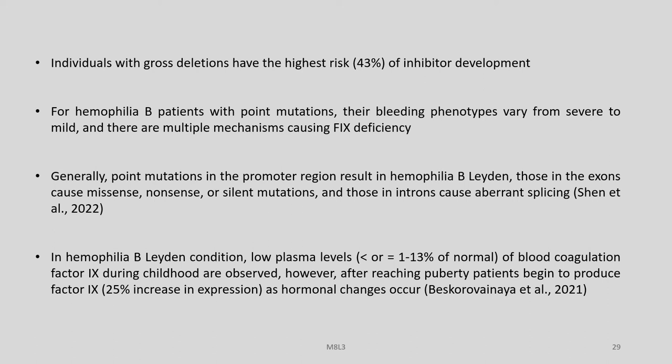Individuals with gross deletions of F9 have the highest risk of inhibitor development, about 43%. For Haemophilia B patients with point mutations, bleeding phenotypes vary from severe to mild with multiple mechanisms causing factor 9 deficiency. Generally, point mutations in the promoter region result in Haemophilia B Leyden; those in the exons cause missense, nonsense, or silent mutations; and those in the introns cause aberrant splicing. In Haemophilia B Leyden, low plasma levels of factor 9 (about 1–13% of normal) during childhood are observed; however, after puberty, patients begin to produce more factor 9, with about a 25% increase in expression as hormonal changes occur. With this we come to the end of part A of this lecture, which will be continued in part B.